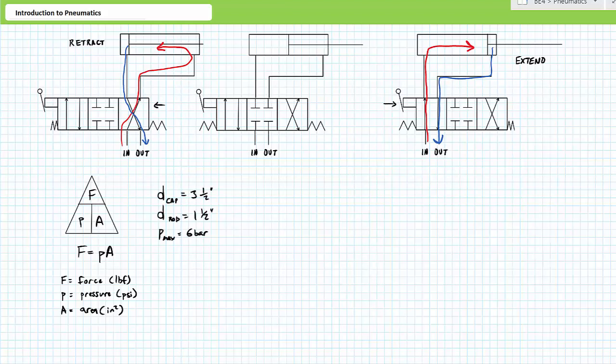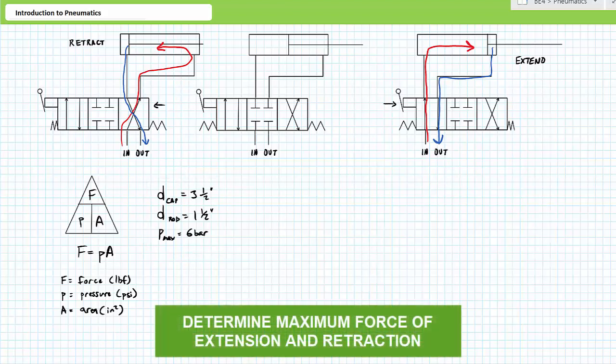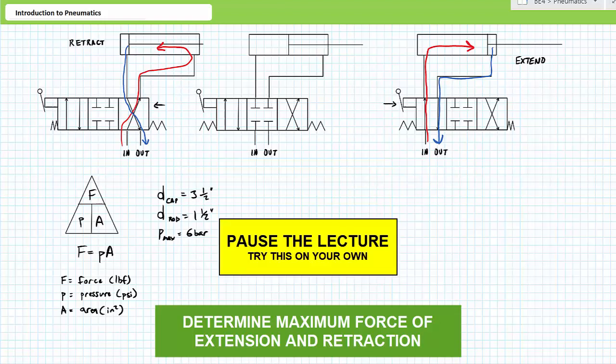As a quick test of your requisite knowledge, consider a double-acting cylinder with a cap diameter of 3.5 inches and a rod diameter of 1.5 inches. Let's say the maximum pressure this system is capable of exerting is 6 bar. See if you can determine the maximum extension force and the maximum retraction force of this cylinder. By all means, pause the lecture and try this on your own.